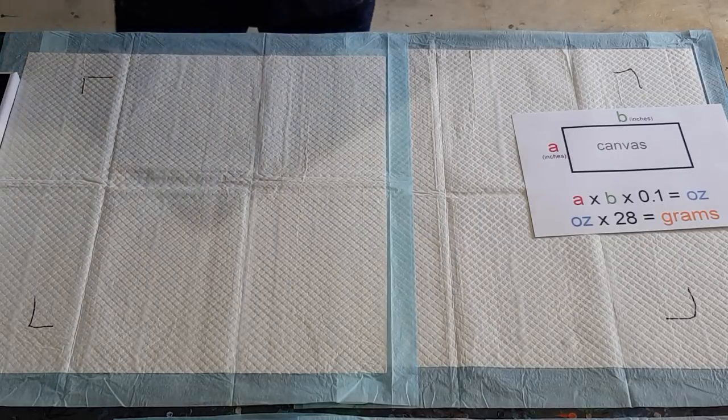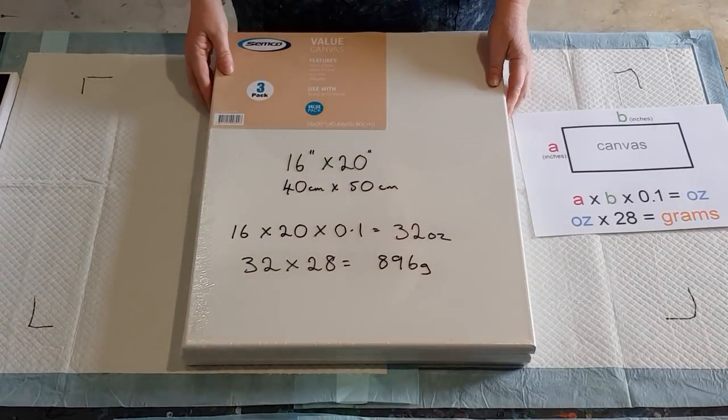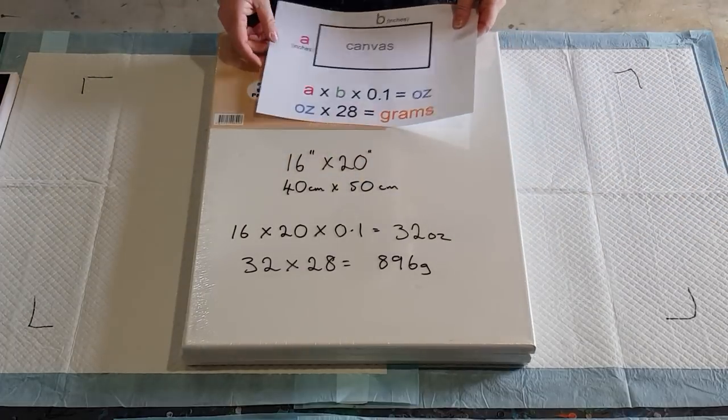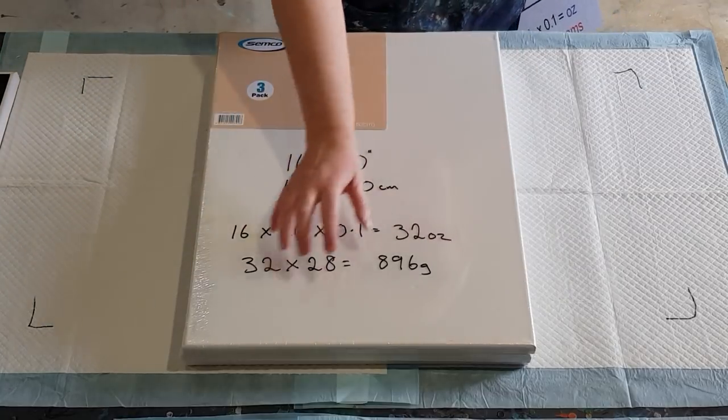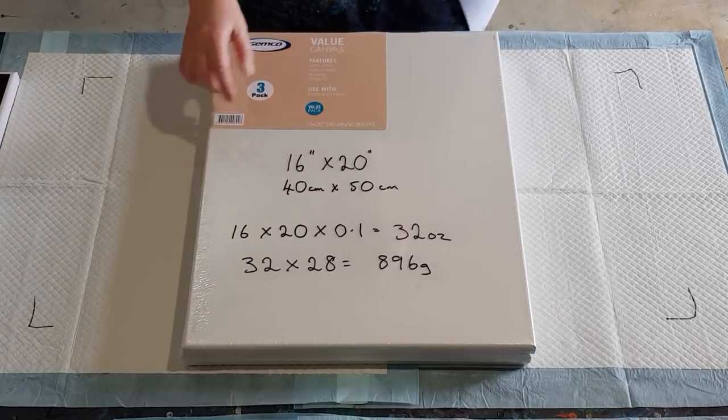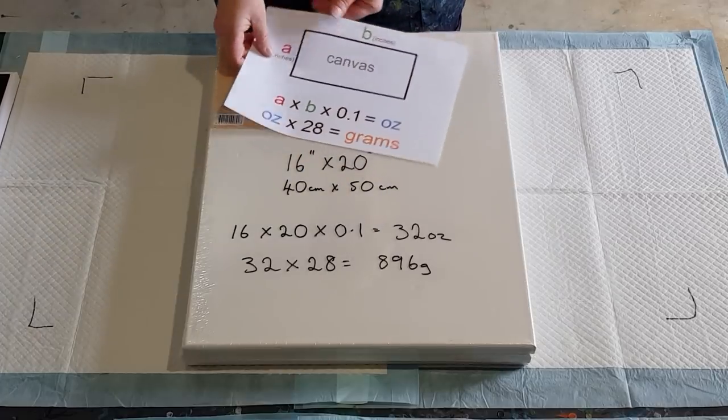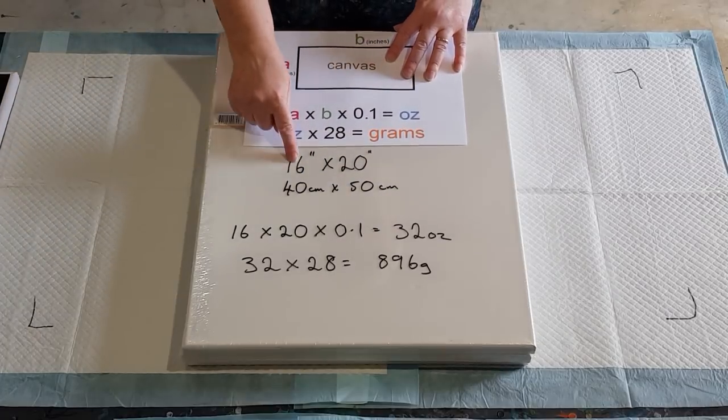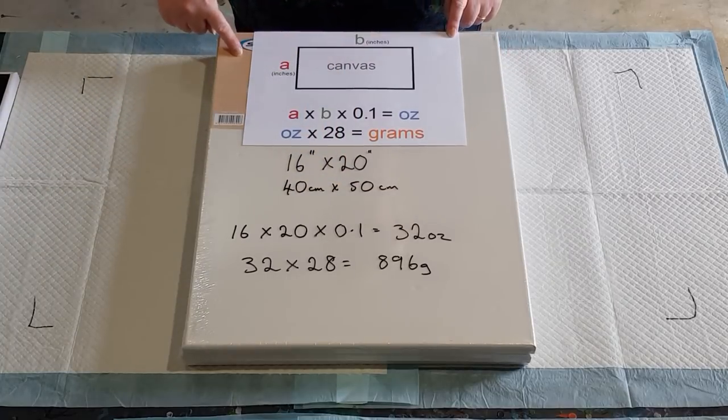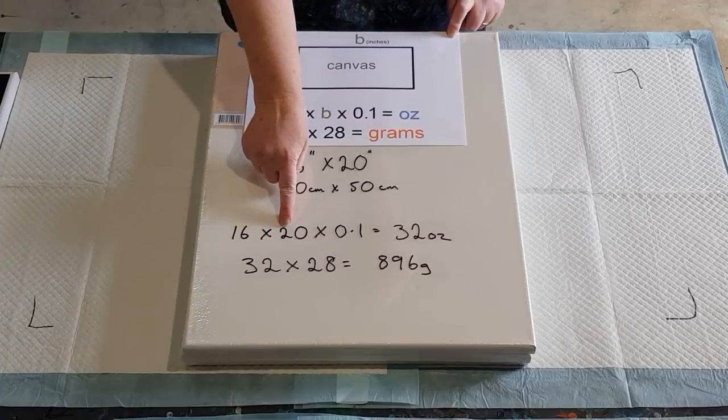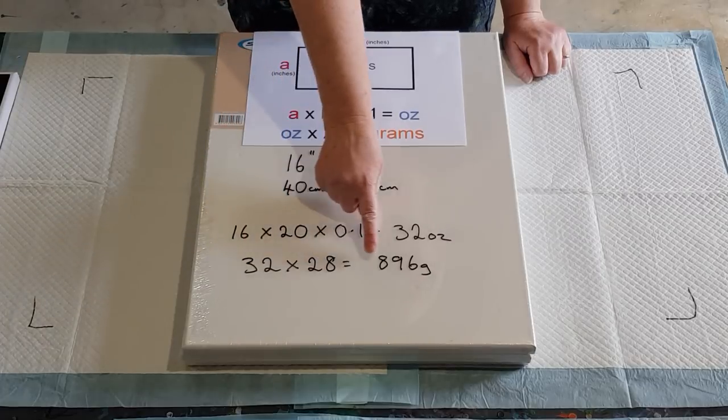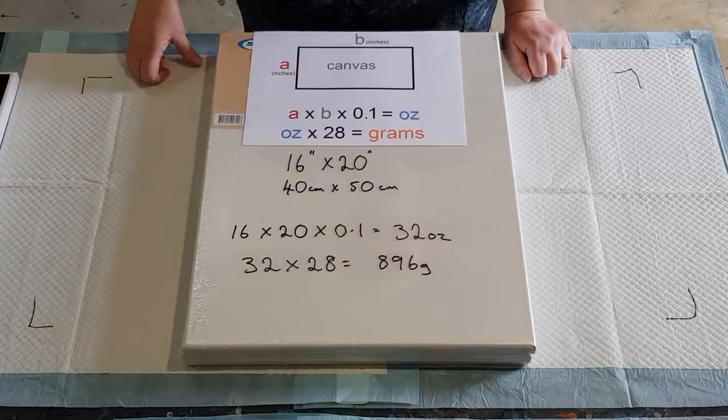Let's do another size, this one here, 16 by 20 inches. If I was doing a flip cup I would drag them this way. I don't like dragging them down that way, I prefer always to have more cups and drag across the short edge. So here we go again, 16 inch by 20 inch, which is 40 centimeters by 50 centimeters. So 16 times 20 times 0.1 gives you 32 ounces. 32 ounces by 28 gives you 896 grams.